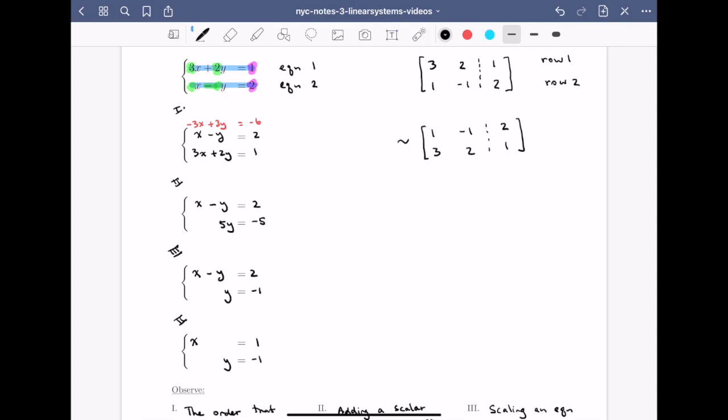I'm going to put a tilde between the two matrices because we'll use the tilde to indicate that we've done one of these allowed operations that doesn't change solution sets of linear systems. Now we have a new row 1 and a new row 2. Notice that if I look at the coefficients 1 and minus 1, I can find those at the first equation over here, and I can find the constant 2 in the first equation there. And the same thing for the second row.